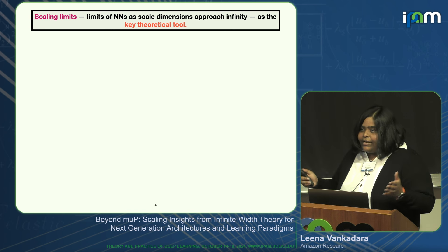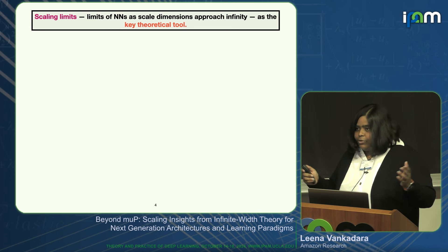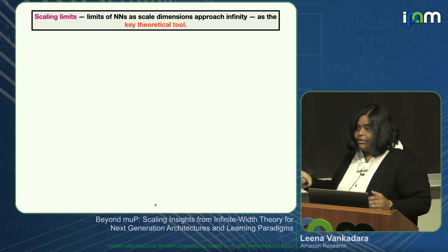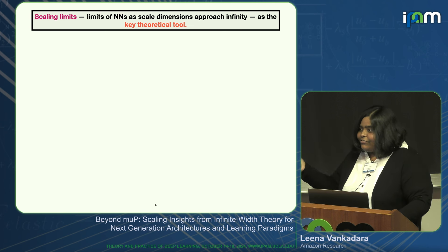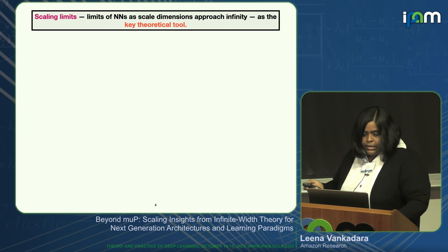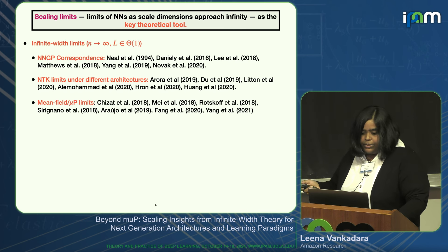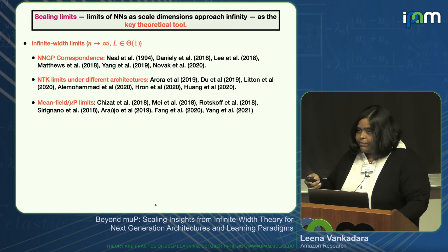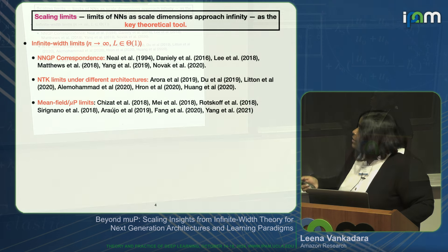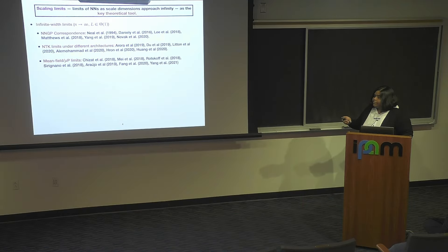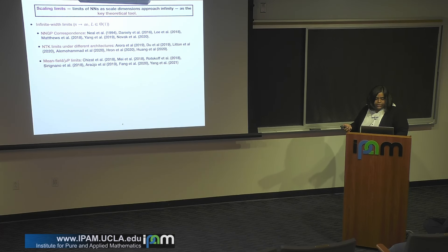One idea to identify optimal scaling rules is to theoretically derive the scaling limit—the limiting model you get by scaling compute to infinity under different rules—and identify those that give optimal limiting models. In full generality this is difficult, but the community has made a lot of progress. Boris, Blake, and others have already given introductions to this topic, so I won't go into too much detail.